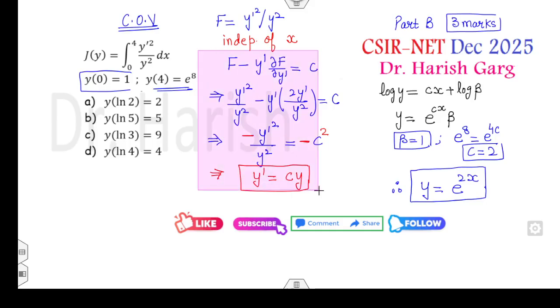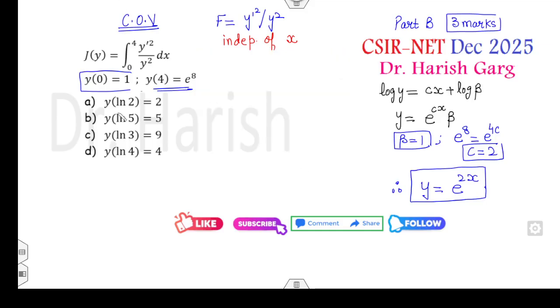Now, once you can get the solution, you can look at the options. Y of ln 2. What is the first option? Y of ln 2? It is e raised to power 2 ln 2. That comes to be 4. But he said 2. Y of ln 5. Y of ln 5 is 25. Y of ln 3. That is 9. Y of ln 4 is 16.